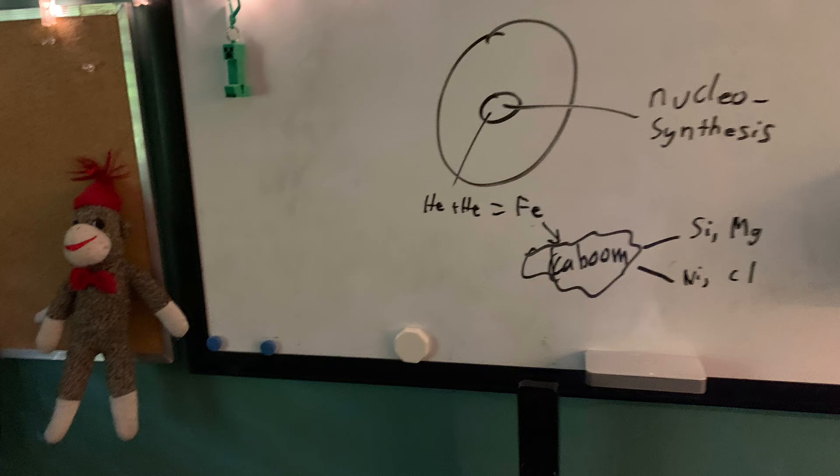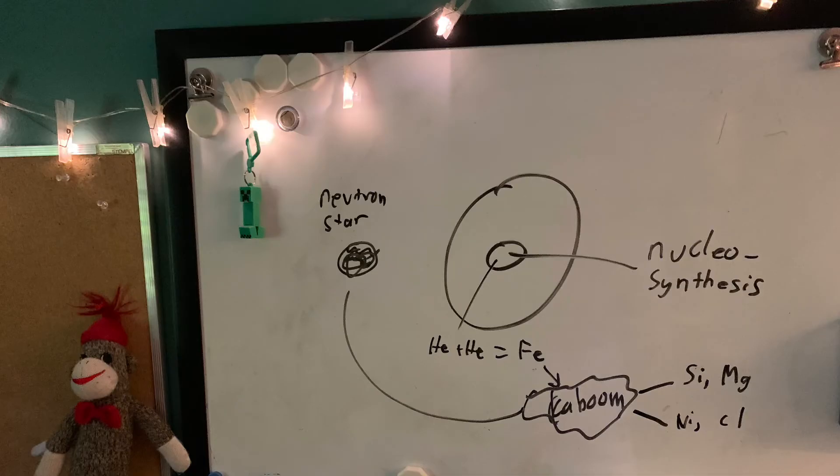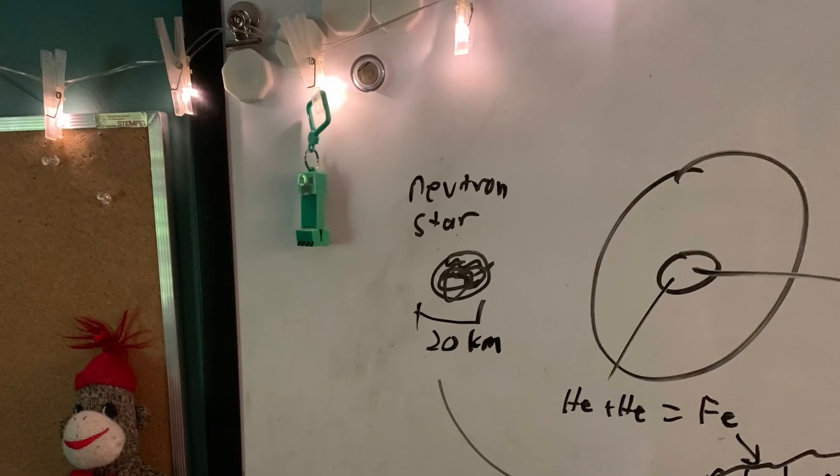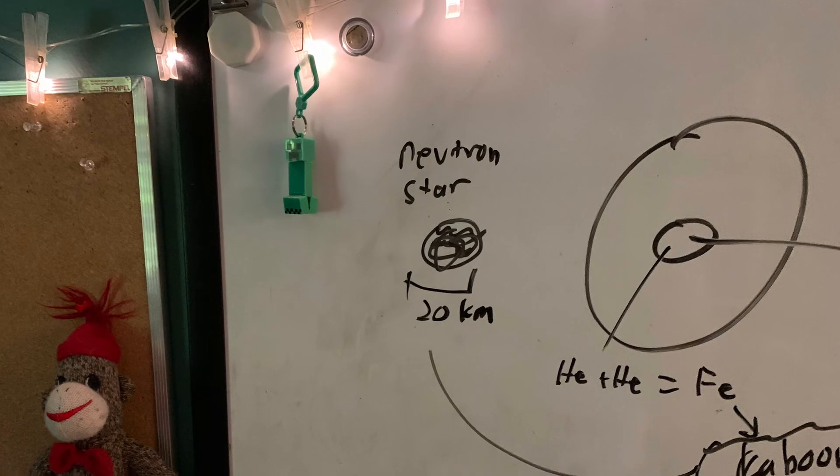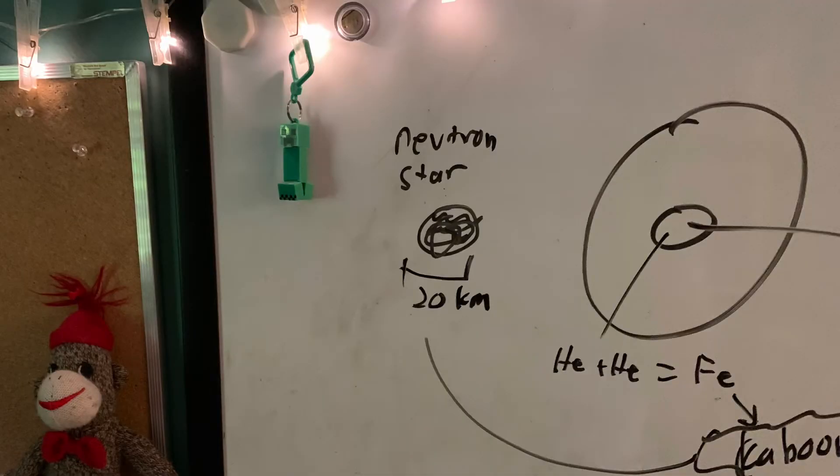But supernovae form more than just new elements. After an explosion, the remnant, or leftover of the star's core, can remain as a neutron star, a very high-density stellar object. How big is a neutron star? An average one is about 20 kilometers across, so they are extremely small and massive. How can something be small and massive? Massive as in has tons of mass, you degenerate?